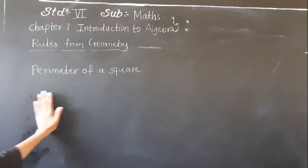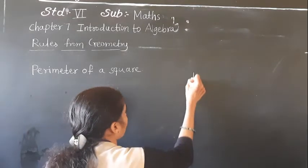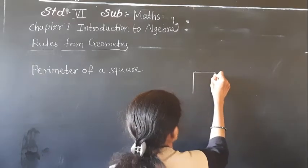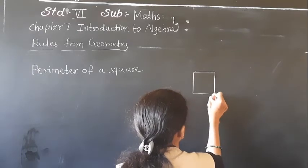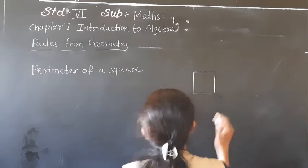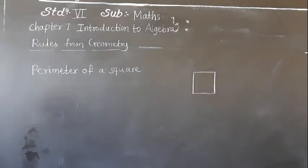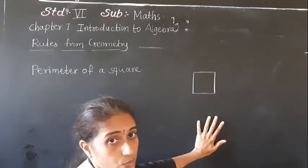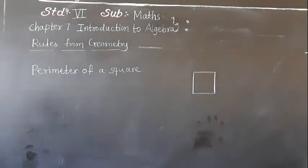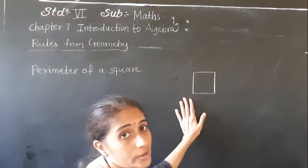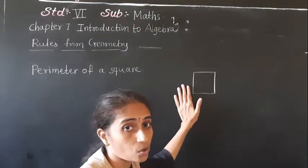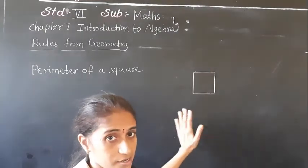Now we are going to learn the perimeter of a square. Here I will draw the square. This is a square. So, perimeter of square — how to generate the rule for this? Square has how many sides? A square has 4 sides, and all sides are equal.